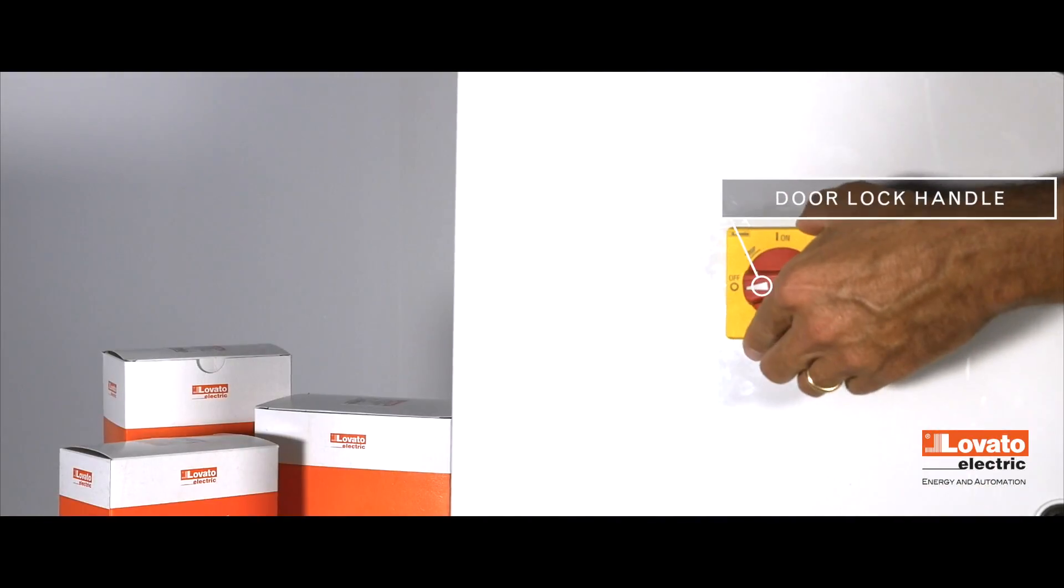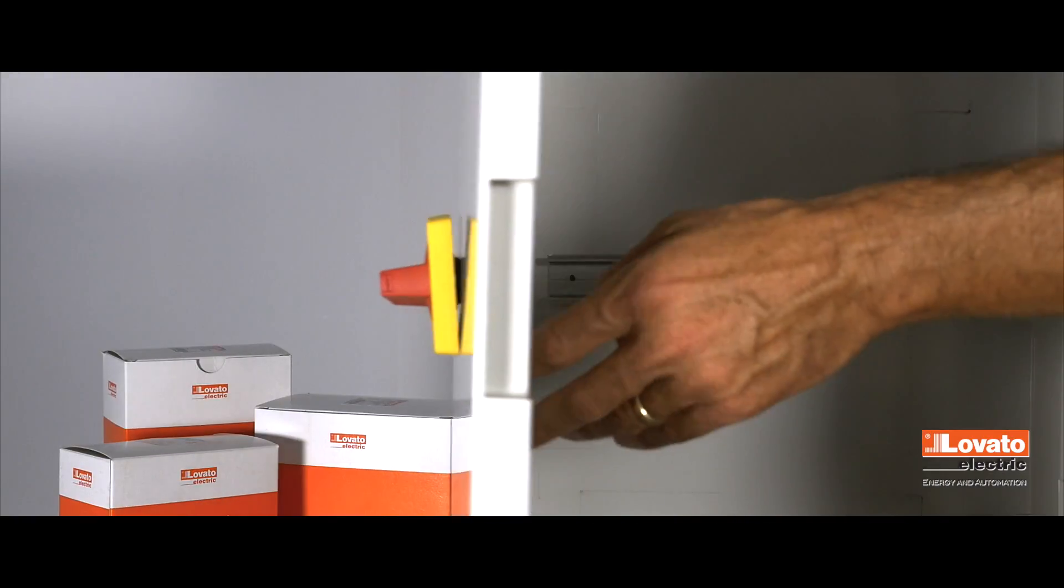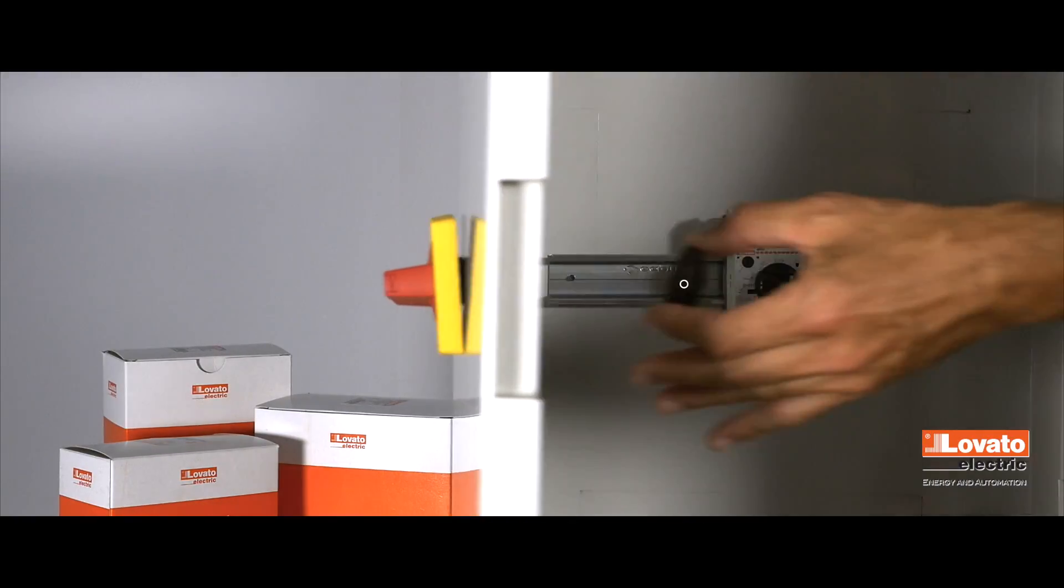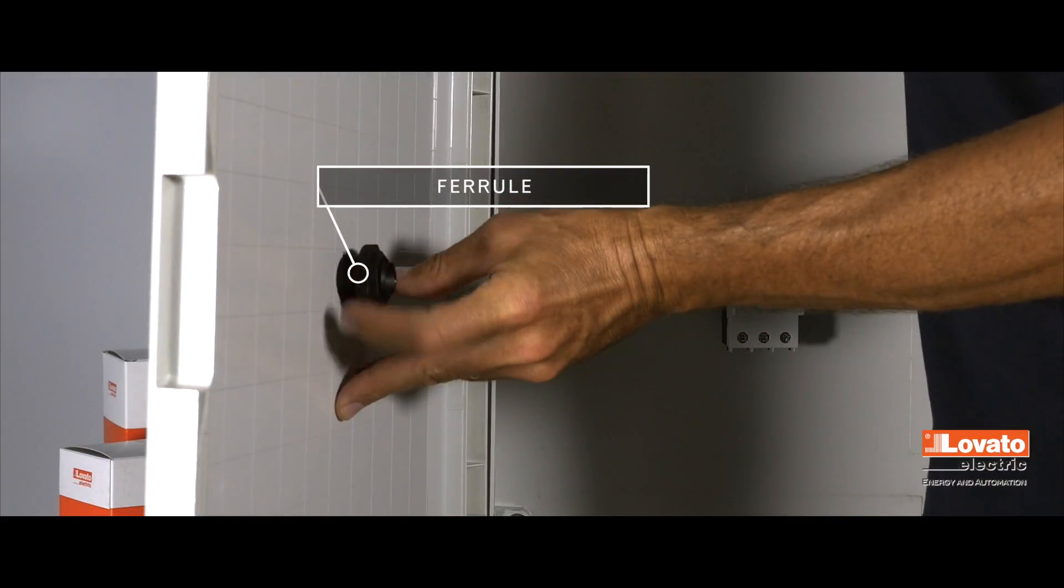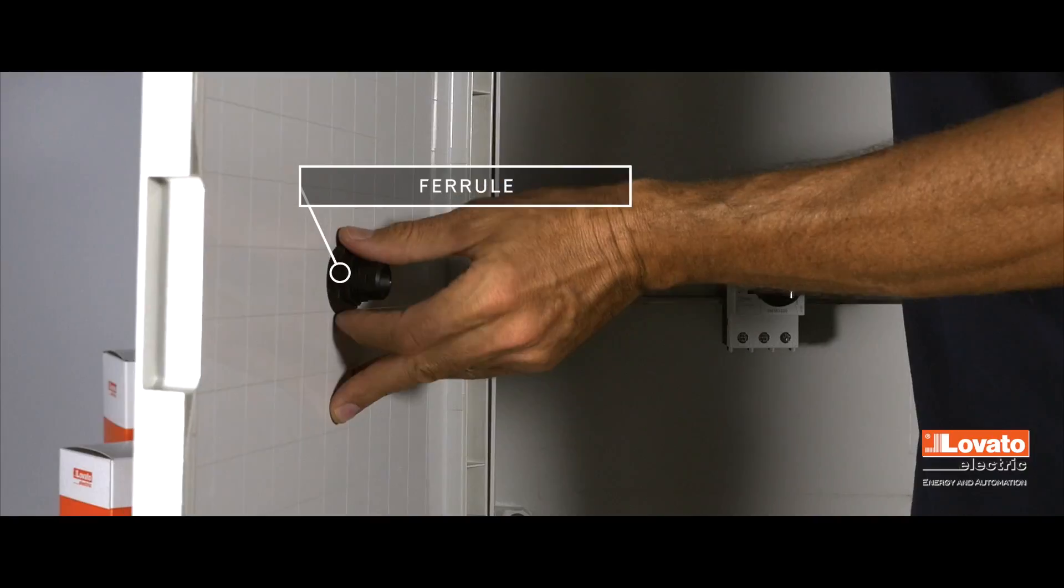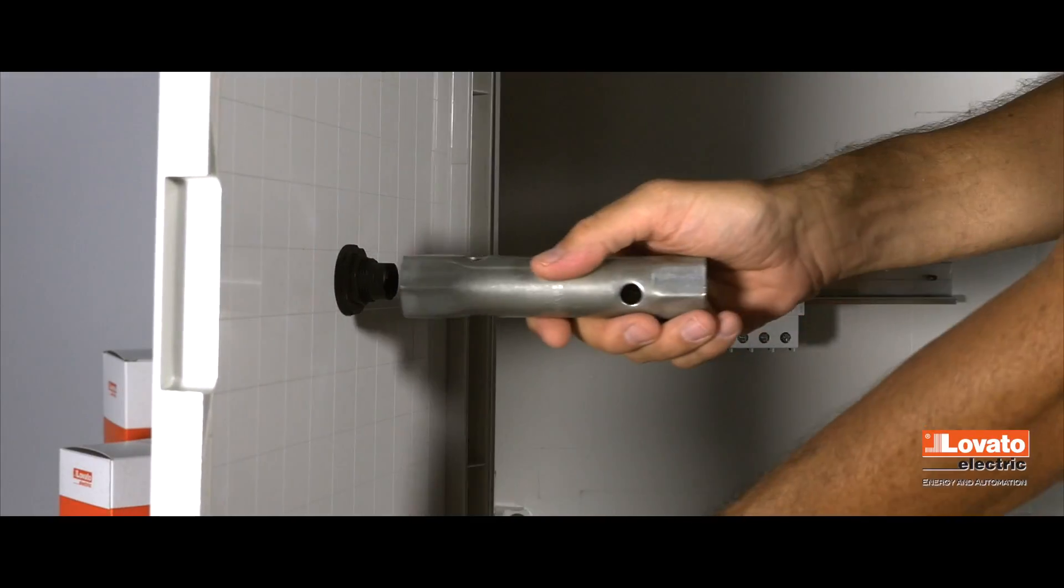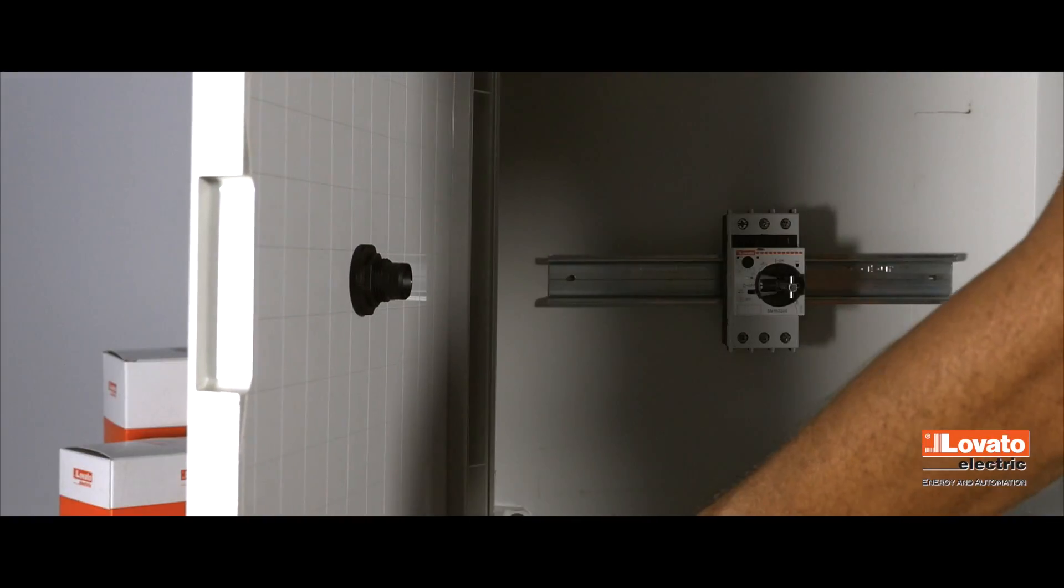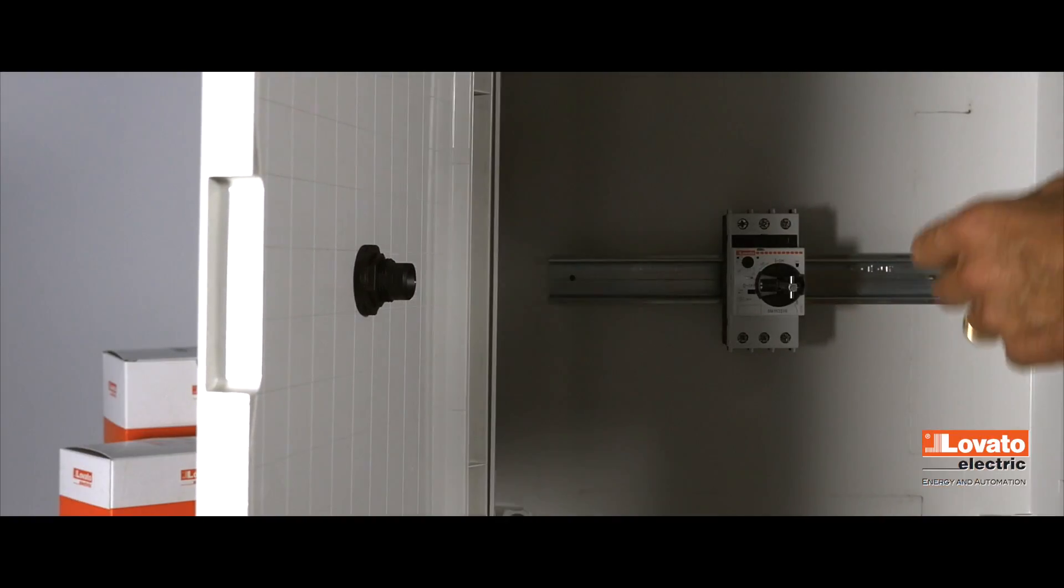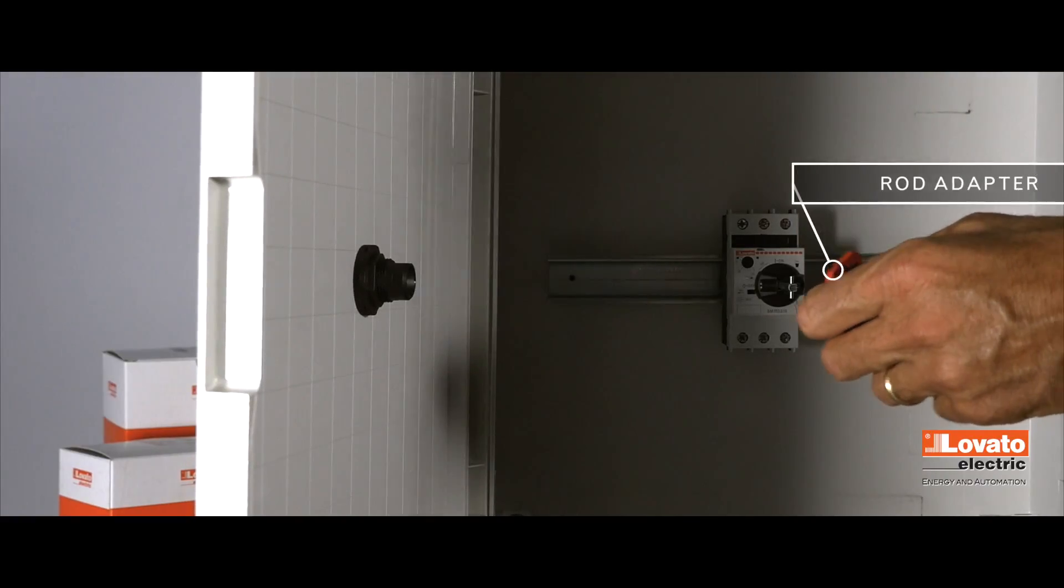Then assemble the handle on the door in the off position. Screw and tighten the ferrule with a wrench. Then mount the rod adapter.